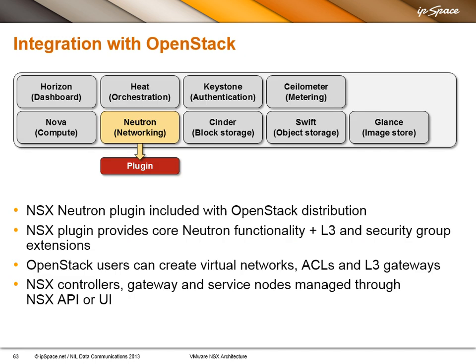On the OpenStack side, what you get is a plugin — formerly known as the Quantum plugin, now called the Neutron plugin — and it's included with the OpenStack distribution. What you get with that is the core Neutron functionality: layer 2 segments, ports, and so on, plus layer 3 forwarding and security group extensions.